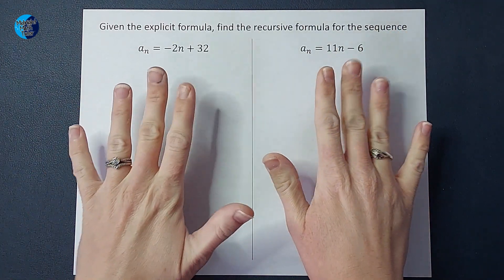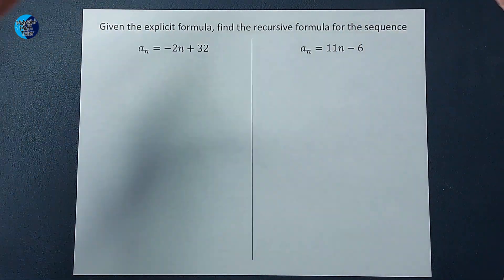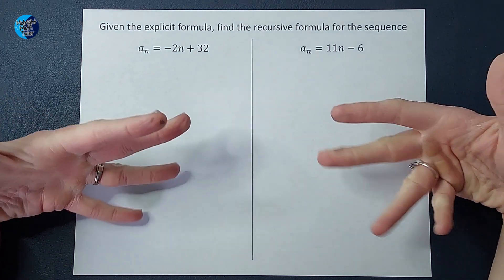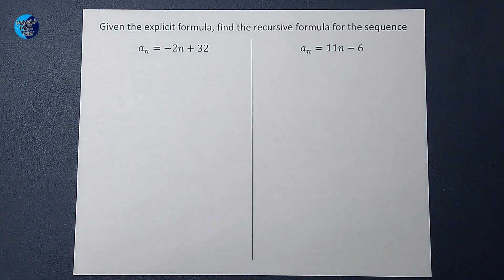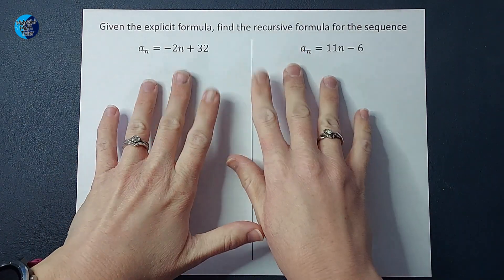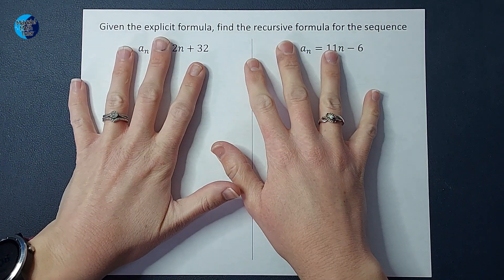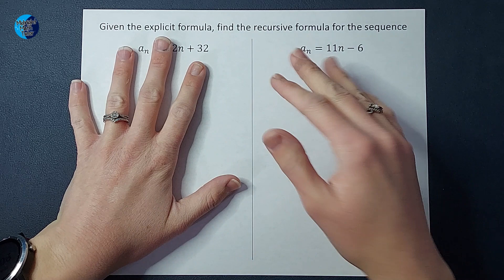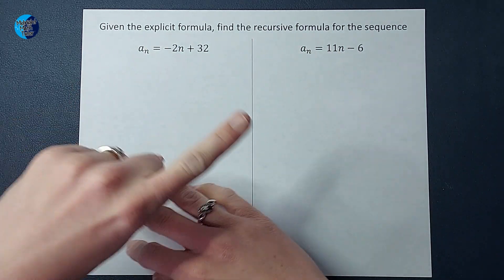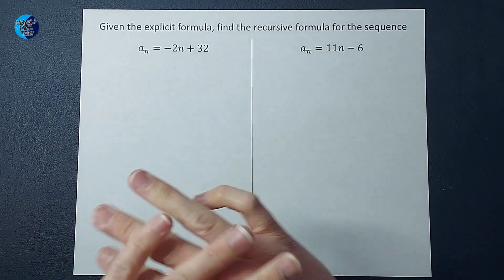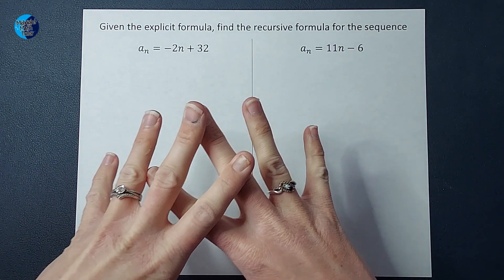Hey guys, we have been given two explicit formulas and we want to find the recursive formula for the same sequence in each of these cases. Now I'm assuming you are a bit familiar with recursive and explicit formulas as we do this video. If that's not the case, I'm just going to link a video for you in the corner that you should probably check out first.